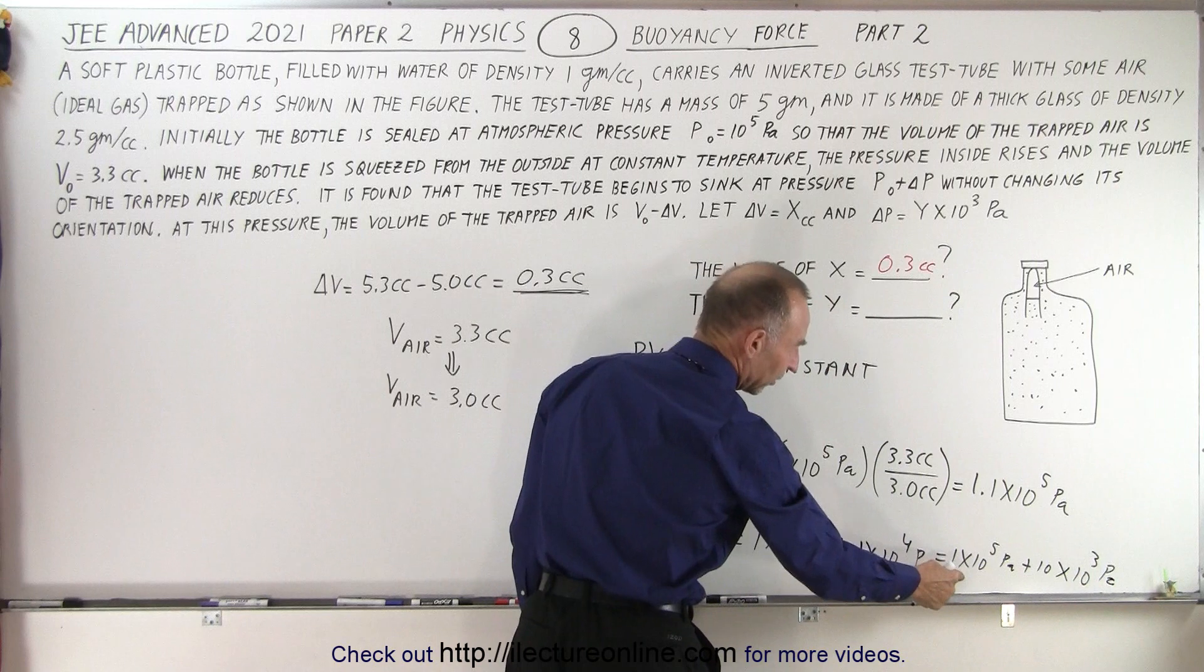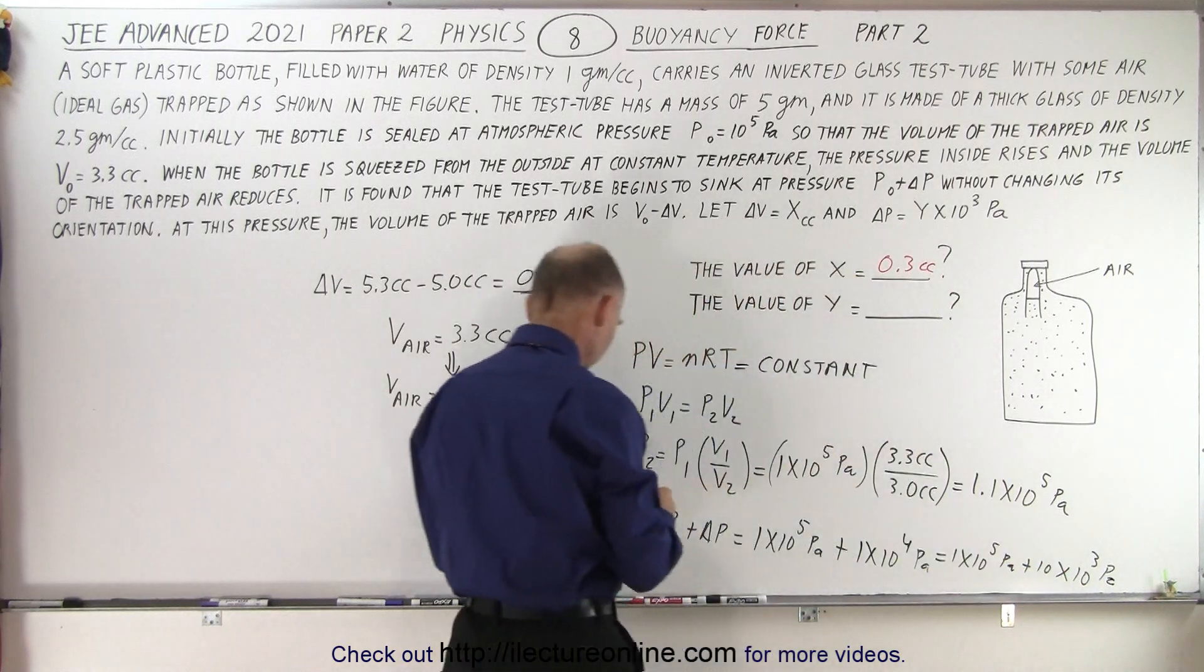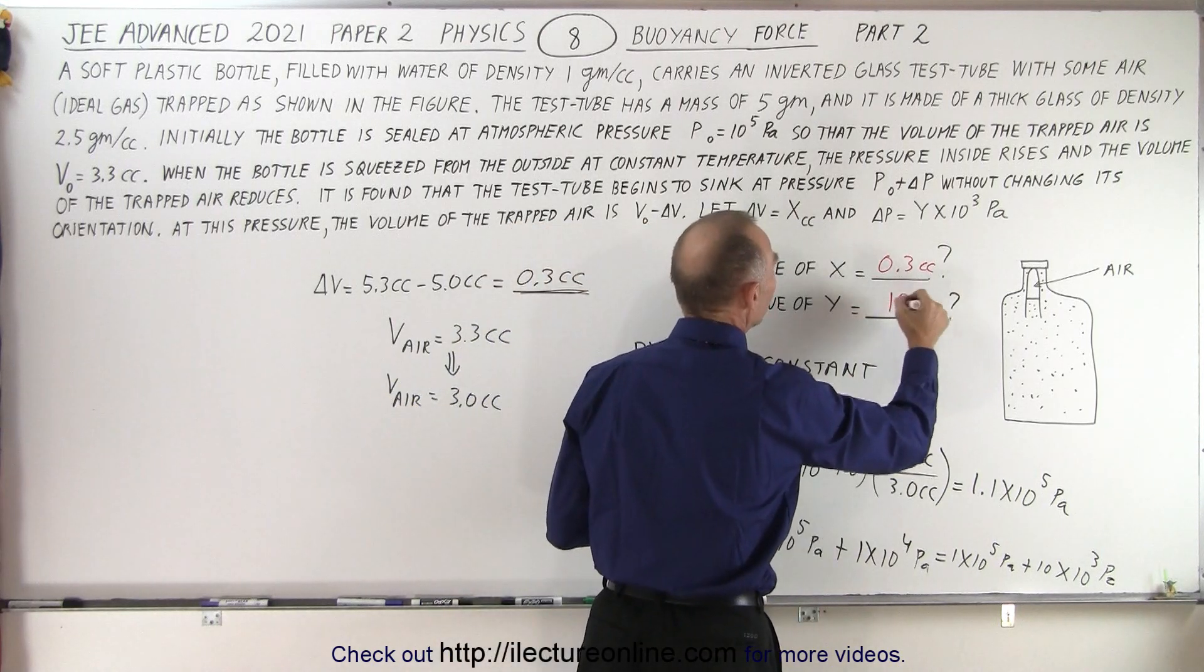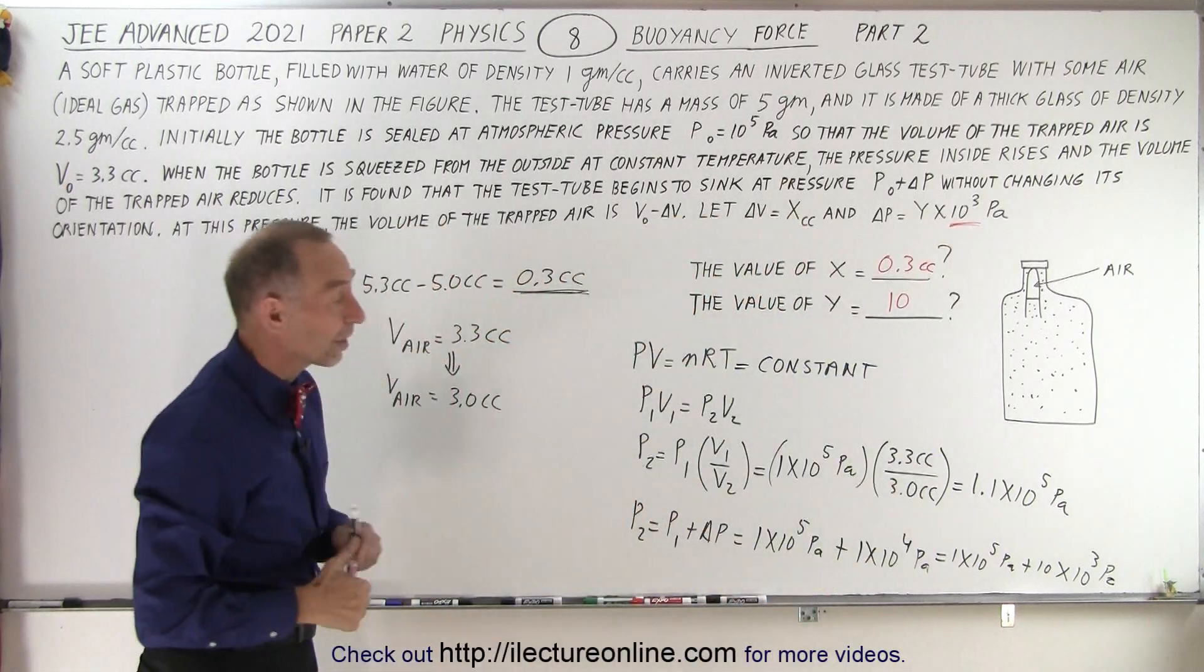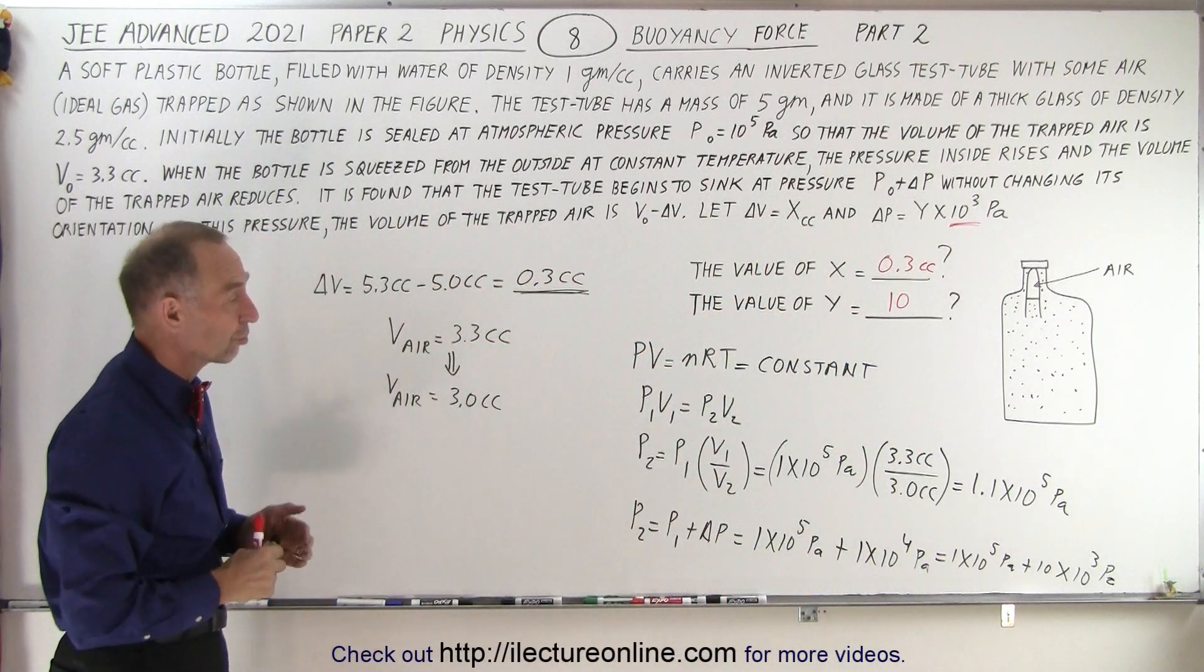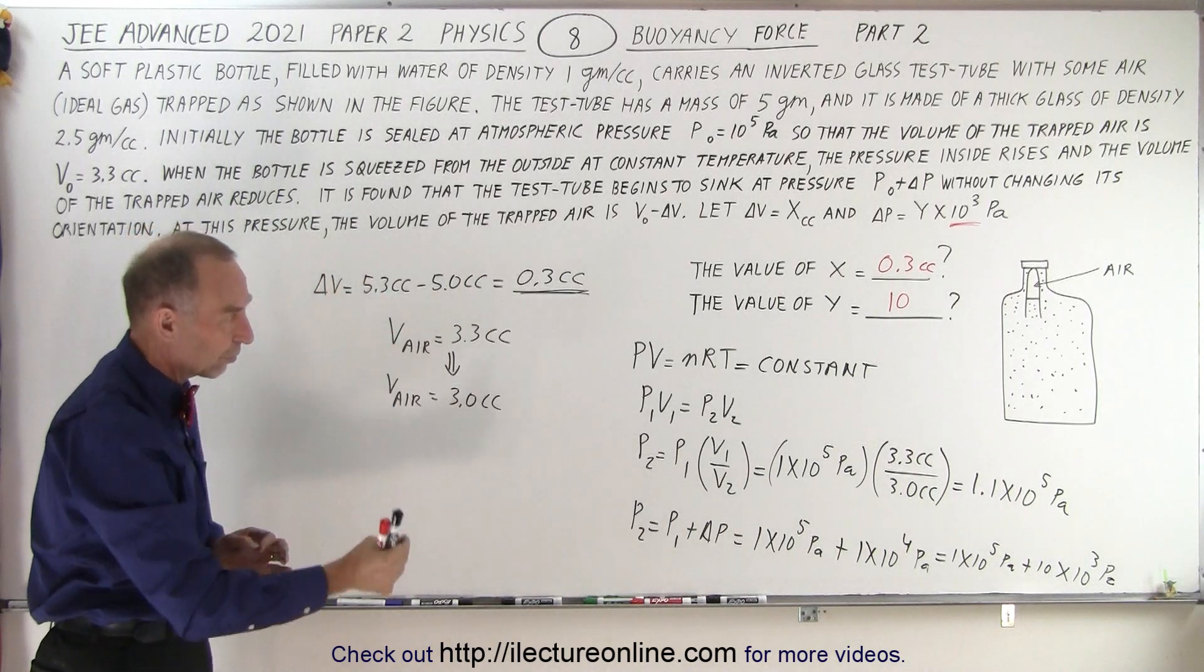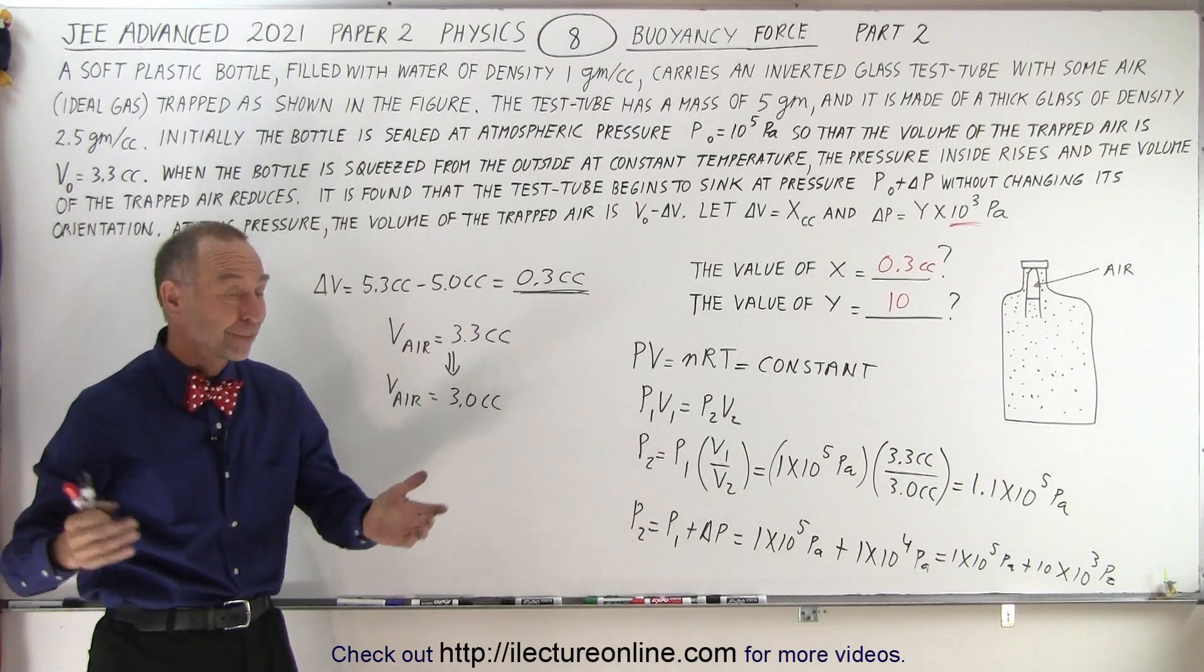We're looking for the number in front, so therefore the value for Y that satisfies this problem is 10 because they're looking for it in terms of 10 to the 3rd pascals. That will be the change in the pressure required to reduce the volume of the gas sufficiently so that the test tube will begin to sink down into the bottle. And that is how it's done.